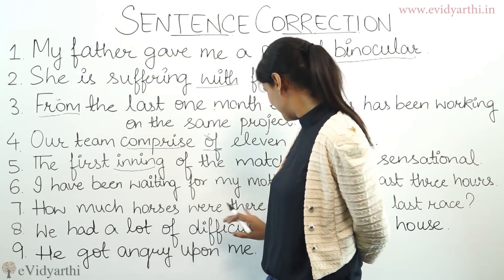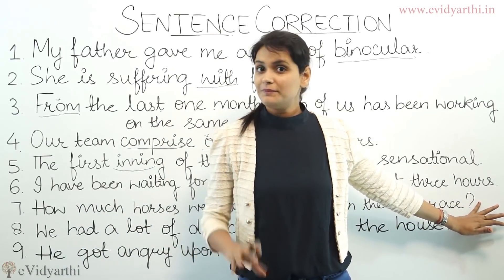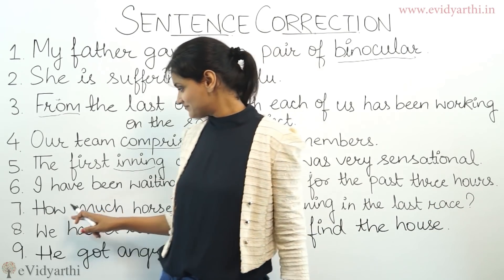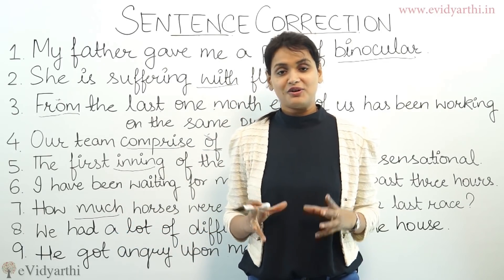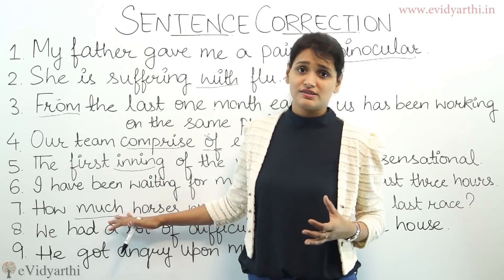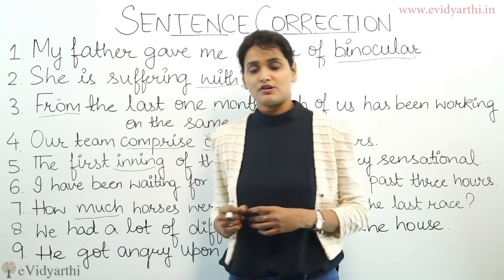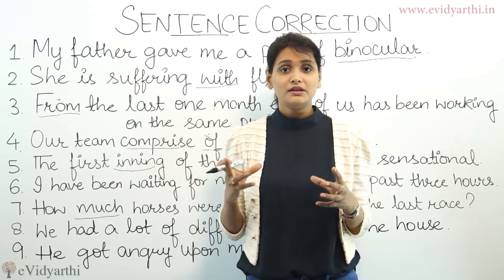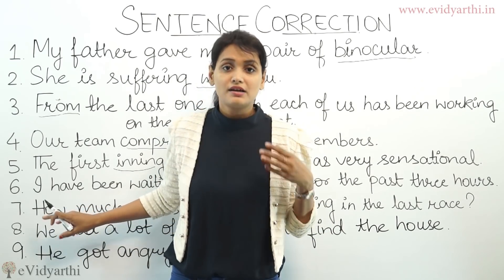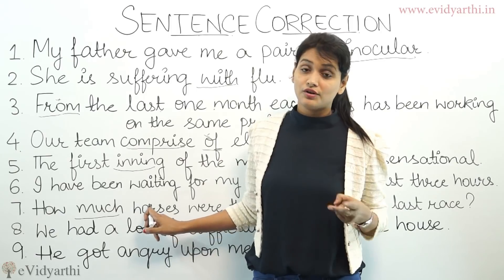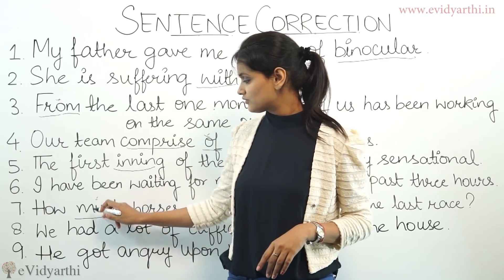Next: how much horses were there running in the last race? What is the mistake? Very basic, very common. That is: how many horses. 'Much' is used for quantity which cannot be measured or counted. How much milk is there in the box. But 'many' is used for things which can be counted. We can count one horse, two horses, three horses. For such countable nouns we use 'many,' not 'much.' So it should be: how many horses were there running in the last race?